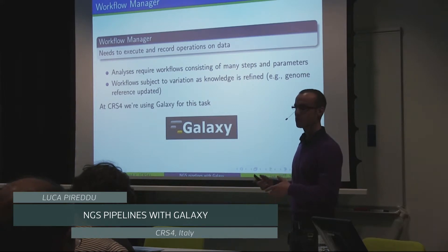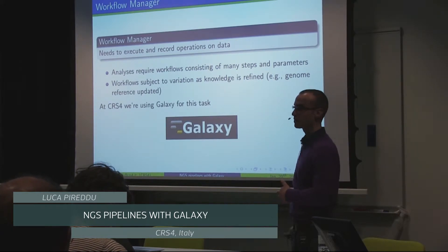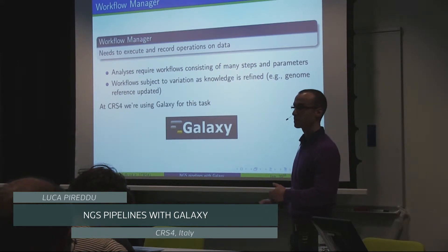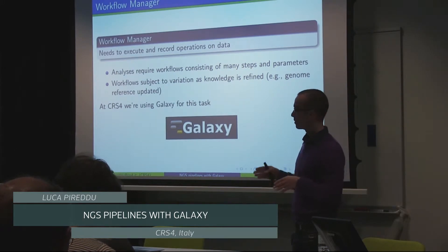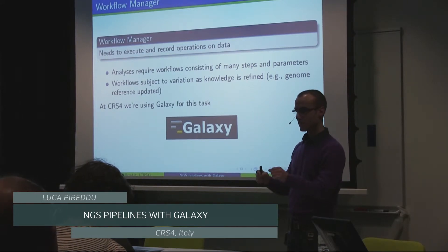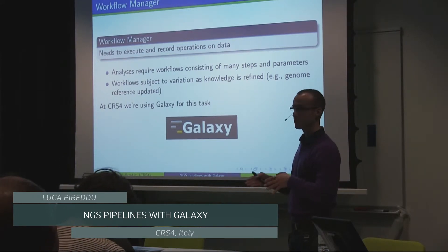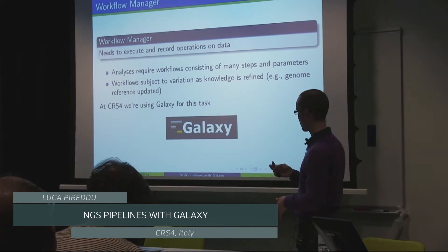The workflows that we're using - I'm talking about our core workflows where we do our primary processing - don't vary very often, but from time to time they do. Maybe because the reference was updated for our alignment, and in that case we need to update our workflows. What's important is that we want to make sure the representation of the operations performed records the fact that one reference was used for an older data set versus a newer reference for a newer data set.